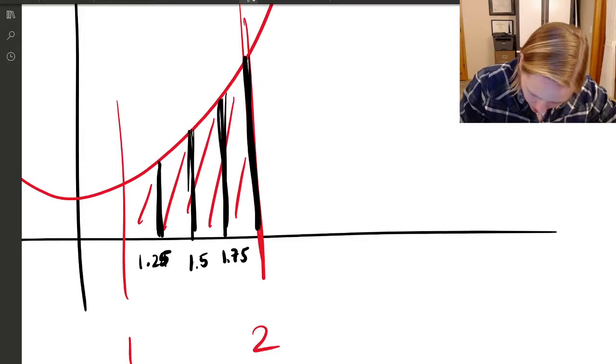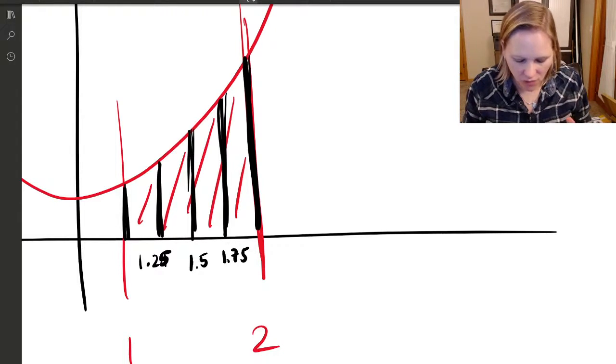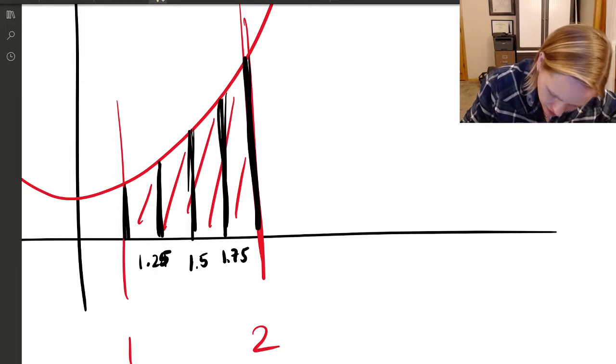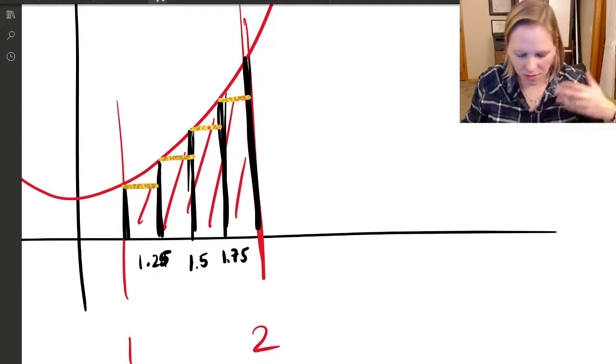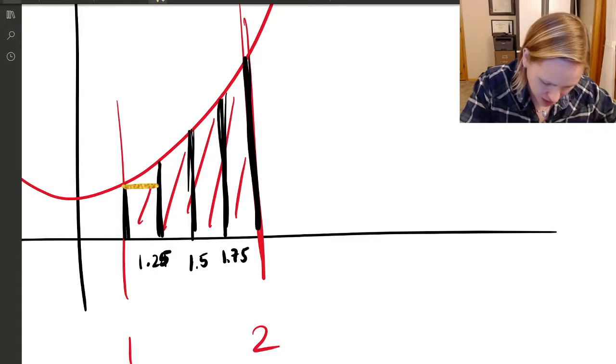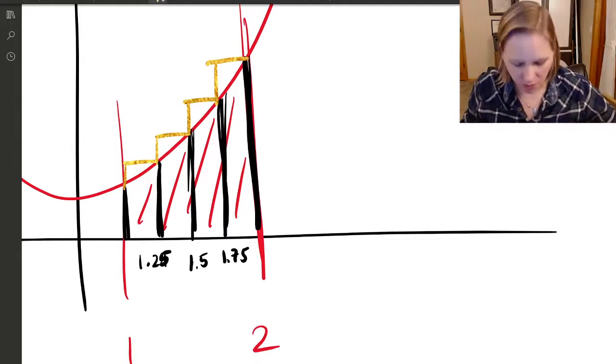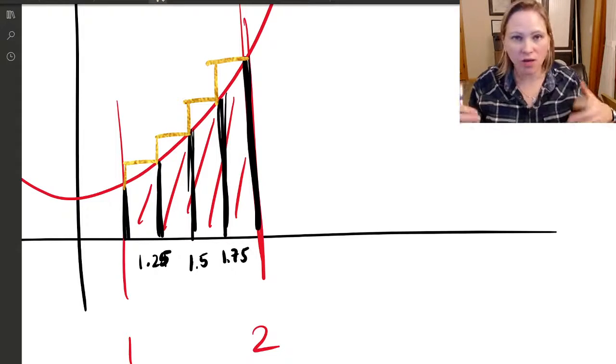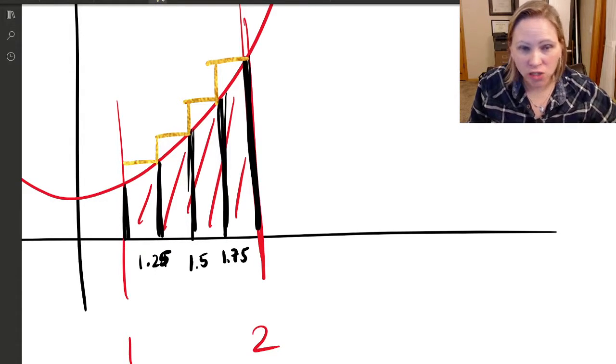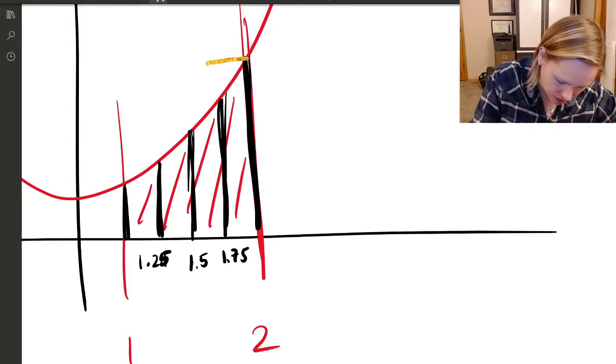If I draw rectangles, I'm going to have a lot of extra space at the top if I do RRAM. And if I do LRAM, I'm going to have a lot of extra space. Look at how much space I'm leaving out. This whole chunk right above the rectangle gets left out. RRAM is too much, it's overestimating. I could do MRAM, but that annoys me because then I'd have to find halfway between 1 and 1.25, which gets a little silly.